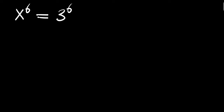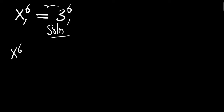Hello, you are welcome. In this video we are going to solve this exponential problem and find all the values of x that will satisfy this equation. We have x^6 = 3^6. Let's have our solution right here. We can simply move 3^6 down, so we are going to have x^6 minus 3^6 equals 0.